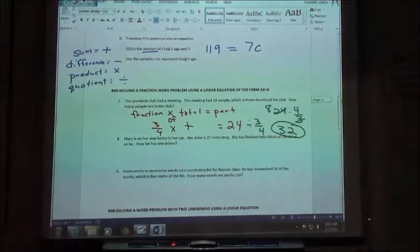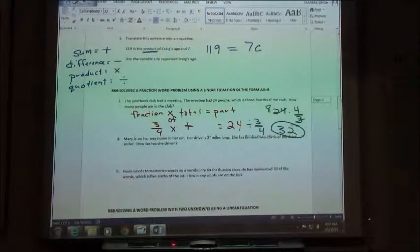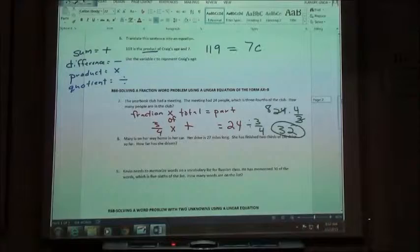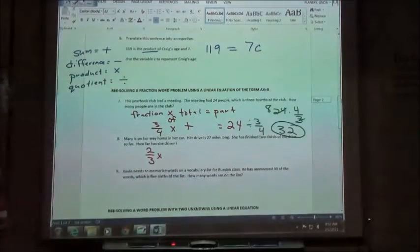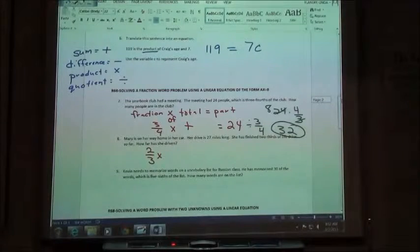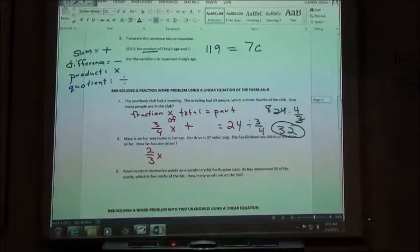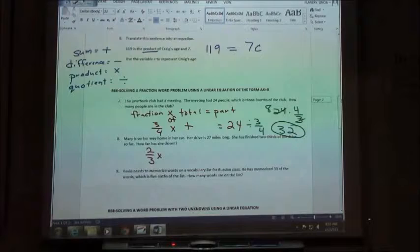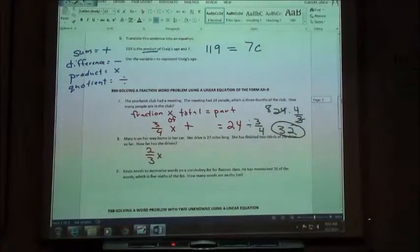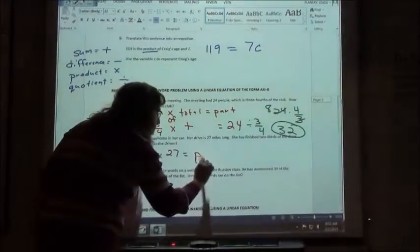Mary's on her way home in her car. Her drive is 27 miles long. She has finished two-thirds of the drive so far. How far has she driven? So, two-thirds is our fraction. Is that 27 miles the total length of her drive or the part that she went so far? That's the total, right? The total is 27.